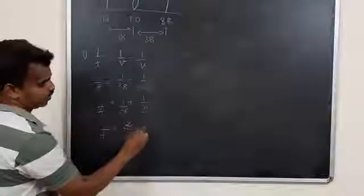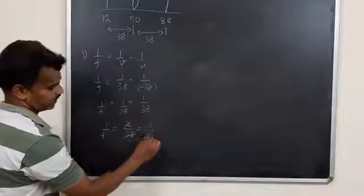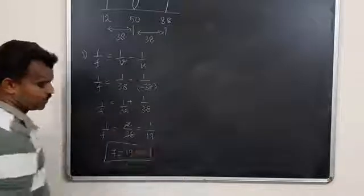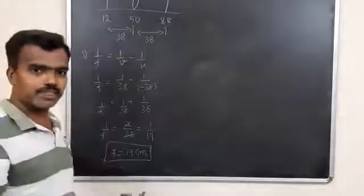You can cancel it out, 1 divided by 19. Therefore, F is equal to 19cm. The focal length of the convex lens is 19cm.